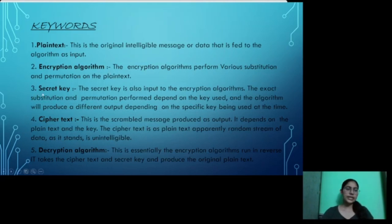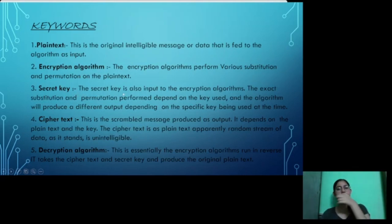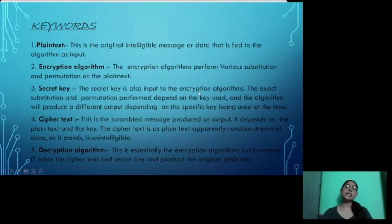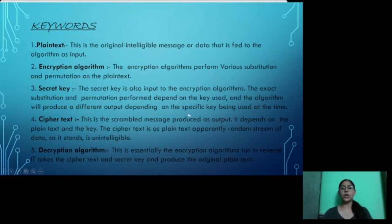The third keyword is the secret key. The secret key is also an input to the encryption algorithm. We use the secret key during encryption. The exact substitution and permutation performed depends on the key used, and the algorithm will produce a different output depending on the specific key being used at the time.